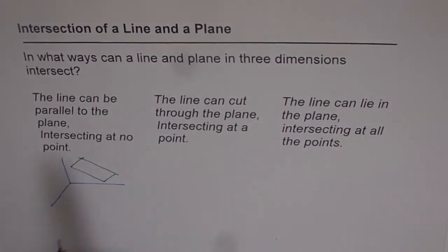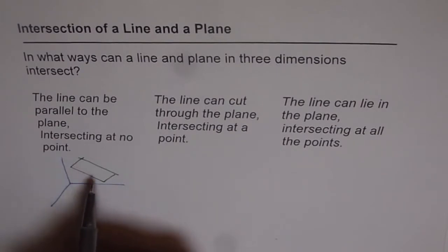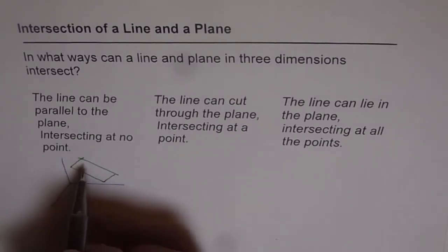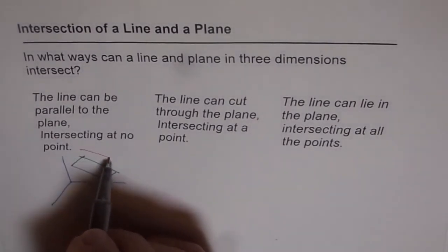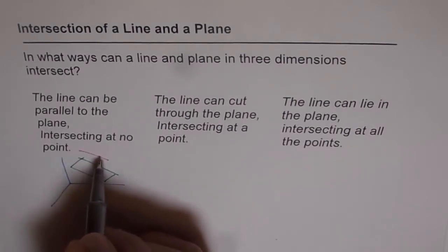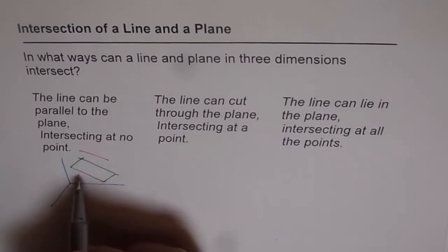Now we can have a line that can be parallel to the plane. Imagine a line which is also parallel to the plane, something like this. Now this line is parallel to the plane so it will never intersect the plane. So these are two parallel things.